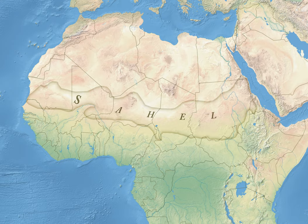The Western Sahel fell to France in the late 19th century as part of French West Africa. Chad was added in 1900 as part of French Equatorial Africa, and the French territories were decolonized in 1960. The Eastern Sahel was annexed by Muhammad Ali of Egypt in 1820, coming under British administration as part of the Sultanate of Egypt in 1914. The Sudanese Sahel became part of independent Sudan in 1956, and South Sudan in turn achieved its independence from Sudan in 2011.